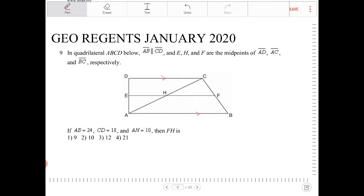Okay. So E is the midpoint of AD, so therefore these two segments are going to be the same. H is going to be the midpoint of AC, so these two are going to be the same. And F is the midpoint of BC, which means these two segments are going to be the same.